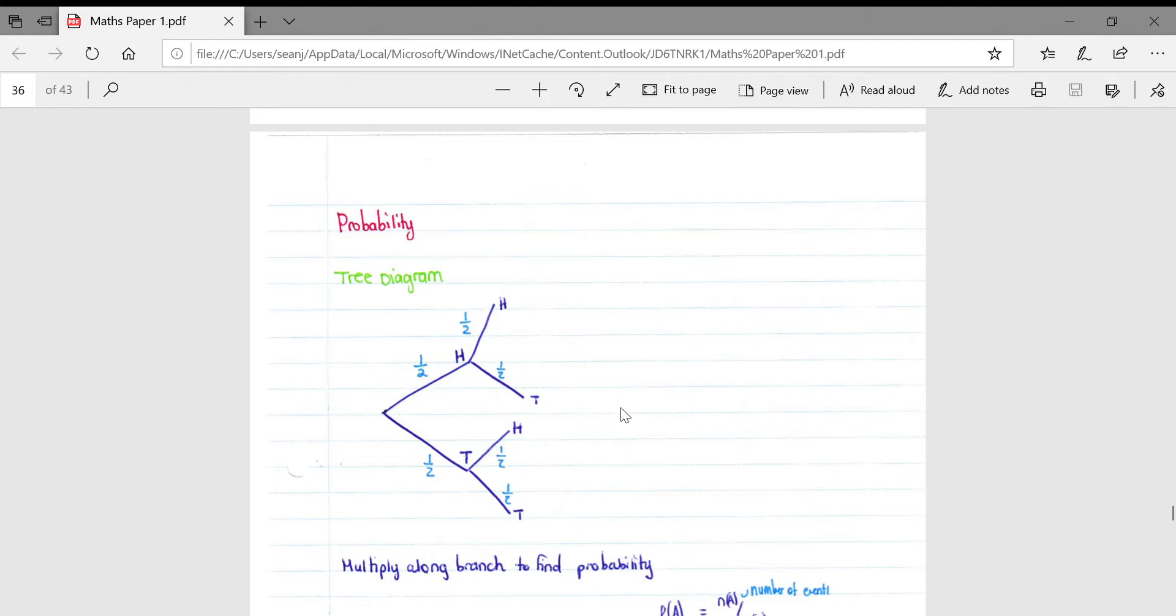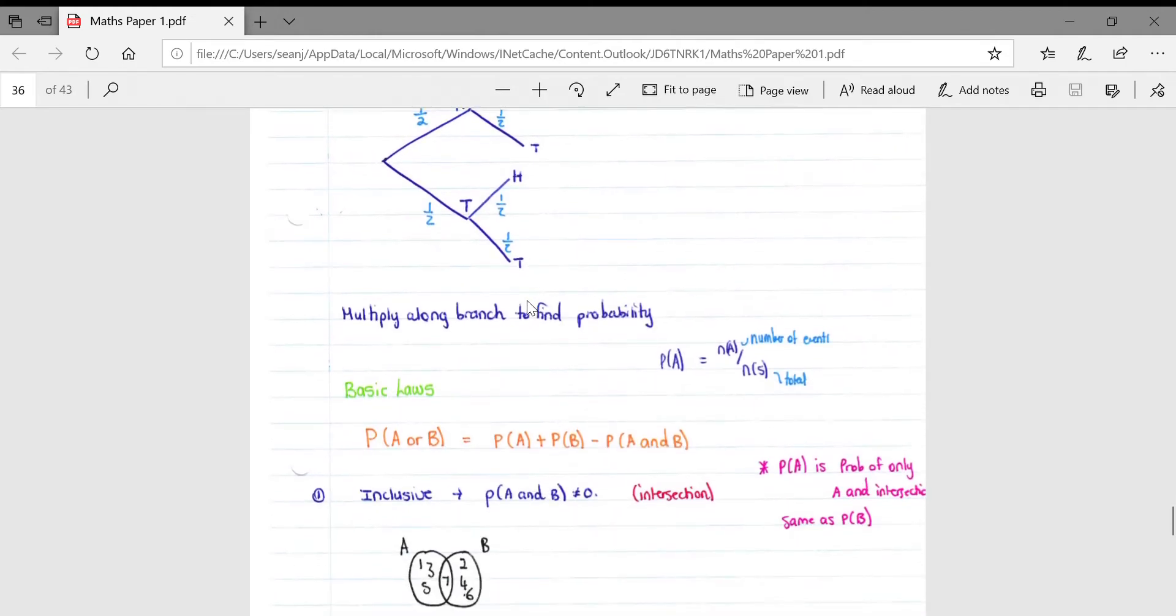If a question says calculate the probability that on both tosses you get a head, you basically look for where two H's are occurring, because that means two heads are occurring in a row. What you do is multiply along the branch to find the probability: one-half multiplied by one-half, which gives you one-quarter. That means you have a one in four chance of getting a head on both tosses.